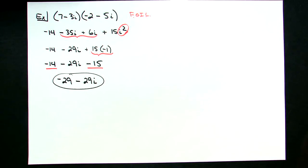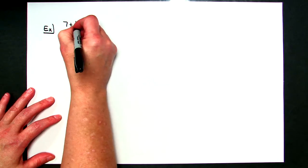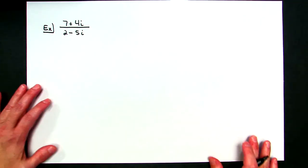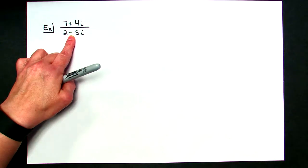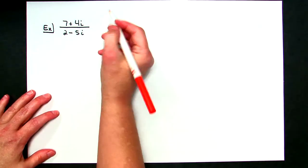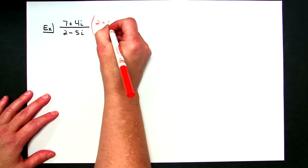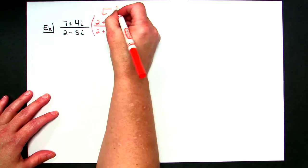One last example — I want to introduce a complex conjugate because it comes up quite frequently when simplifying expressions. I might have a problem that looks like 7 plus 4i all over 2 minus 5i, and the directions tell you to simplify. You're going to multiply by a complex conjugate — a conjugate switches the sign and multiplies by a form of 1. So I choose to multiply by 2 plus 5i over 2 plus 5i. That is our complex conjugate.